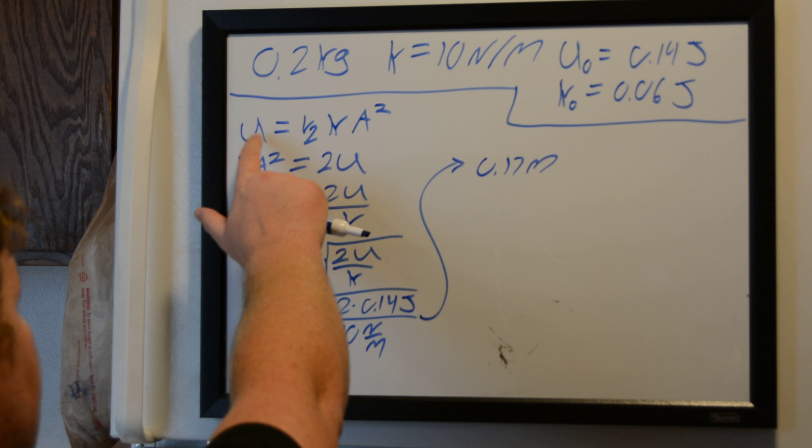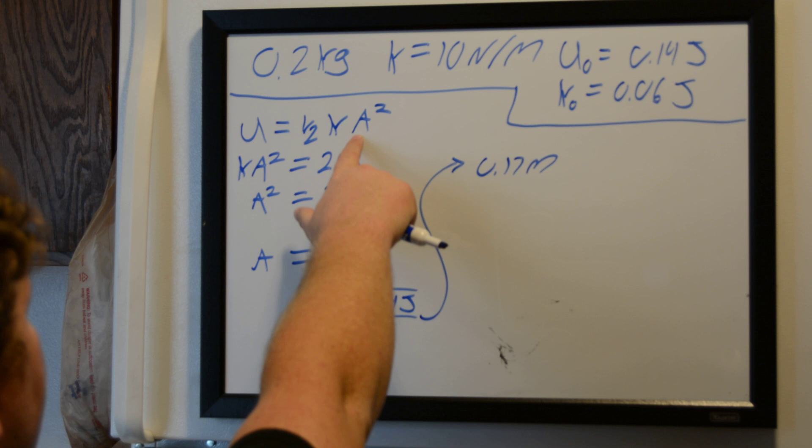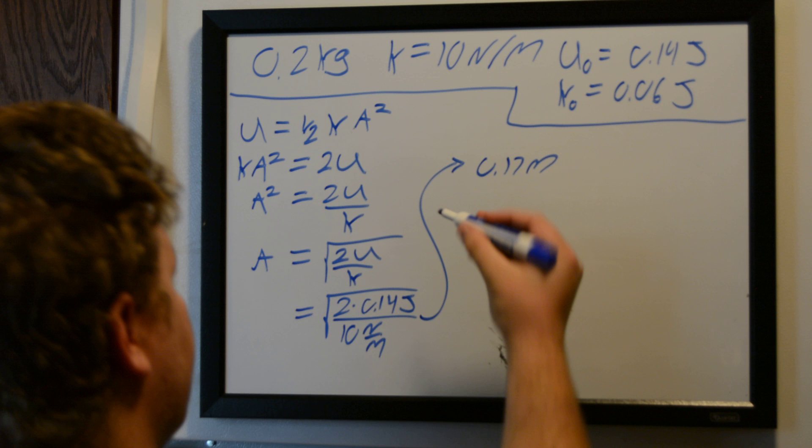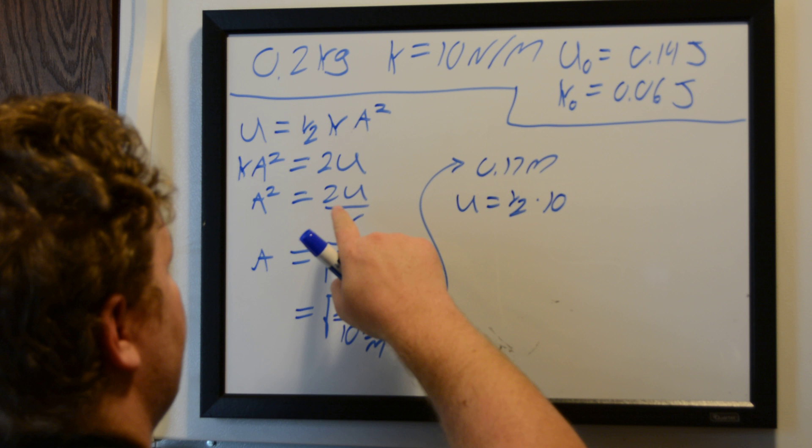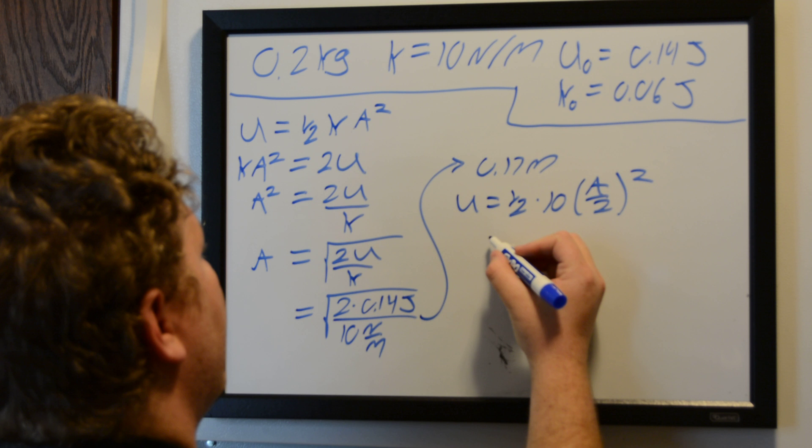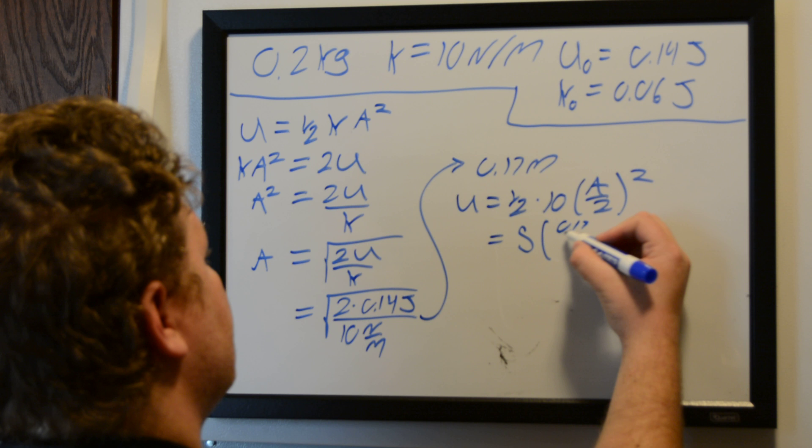honestly, we can just use this equation we had at the start here and plug in half of our amplitude that we found here in for that value. So let's go ahead and do that. That's going to be U is equal to one-half times our spring constant times half of our amplitude squared,